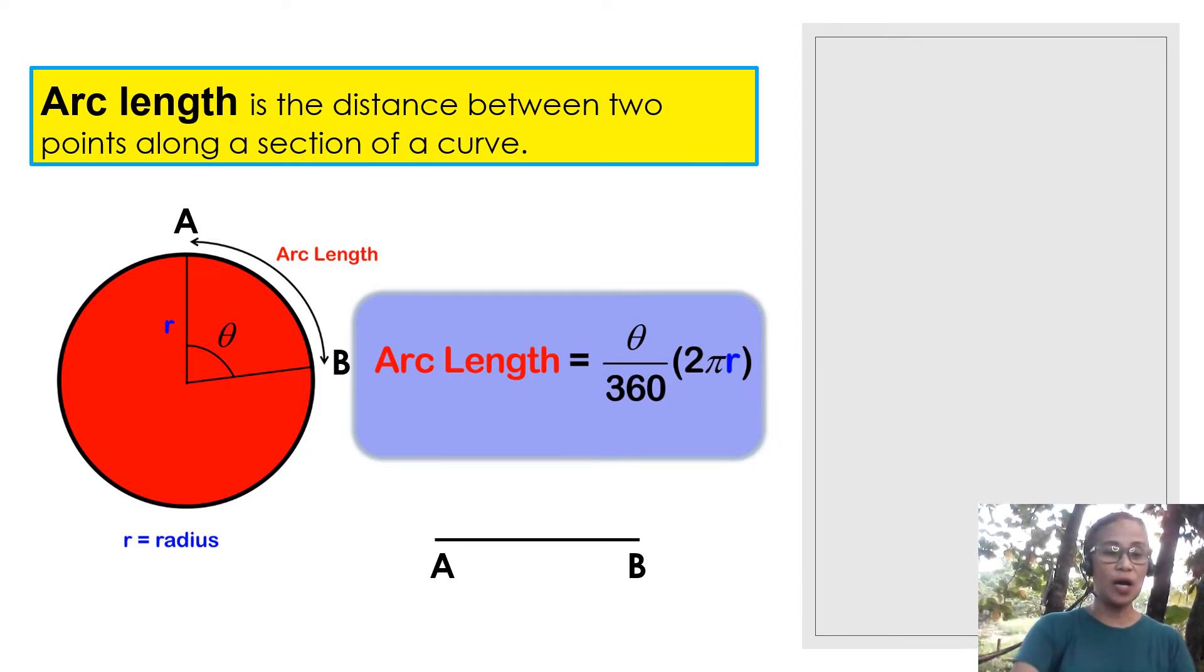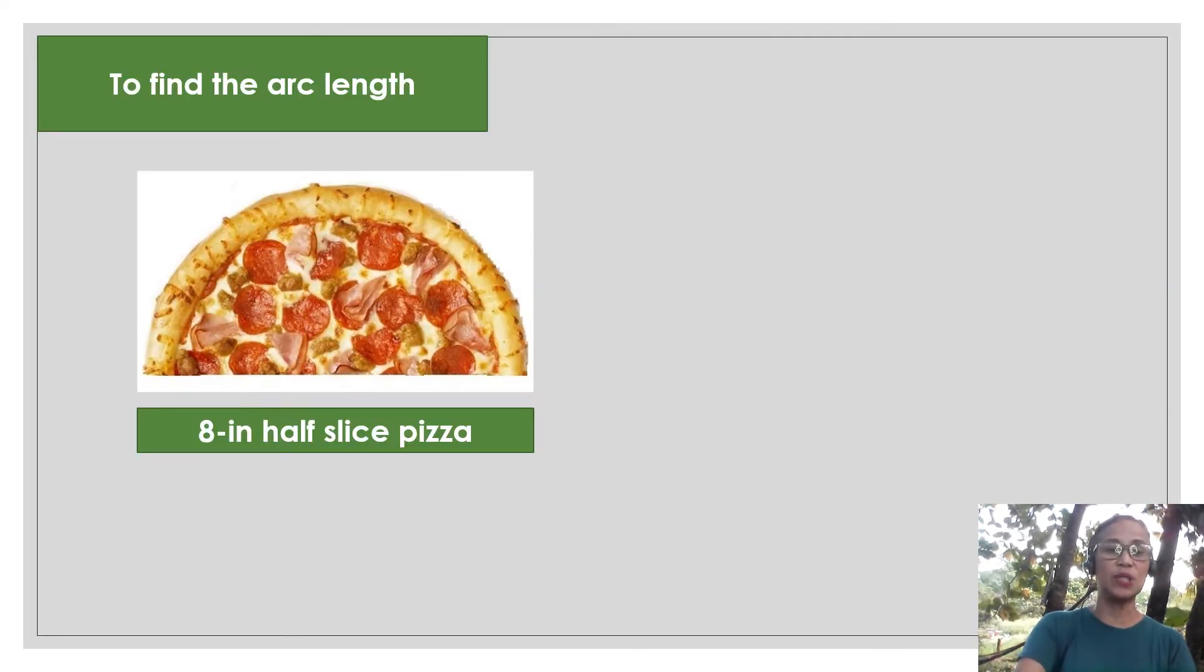So the formula for arc length is given by theta divided by 360, which means that's the central angle. Because that's the part that you are taking from the whole multiplied to 2 pi r. 2 pi r is the formula in finding the whole circumference. So this is the formula when you are dealing with just parts of the whole. We will now use this formula in solving for the arc length of the half slice pizza.